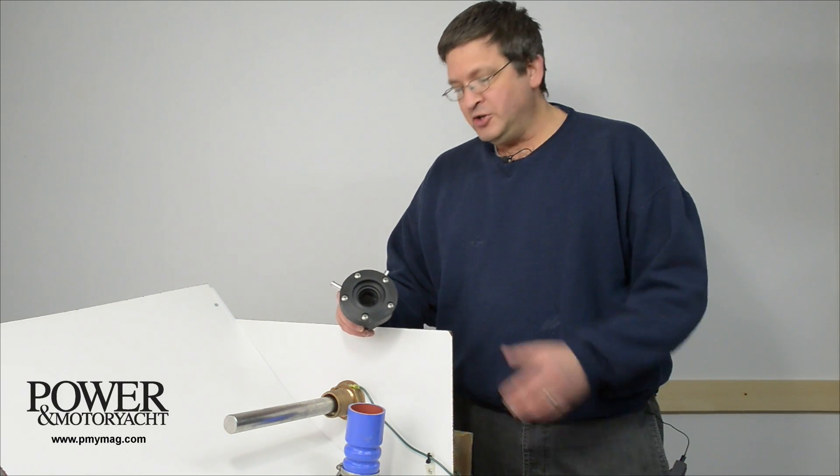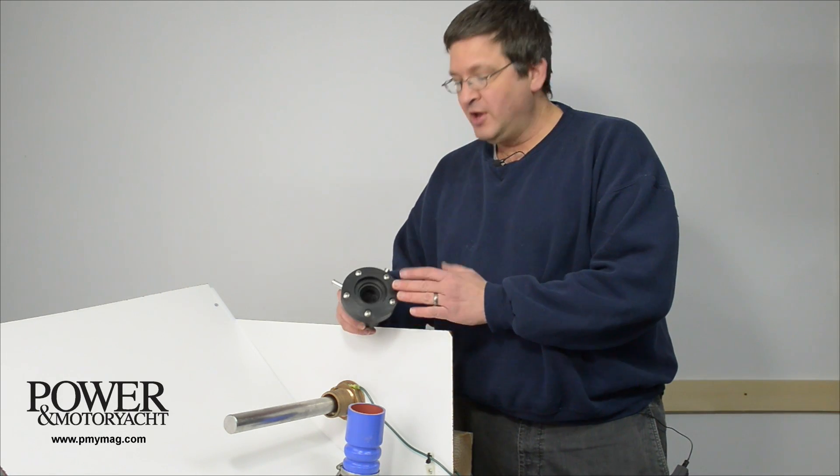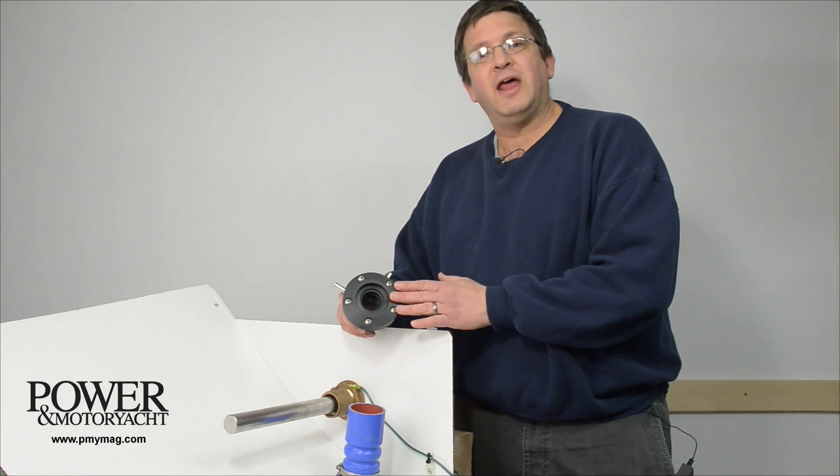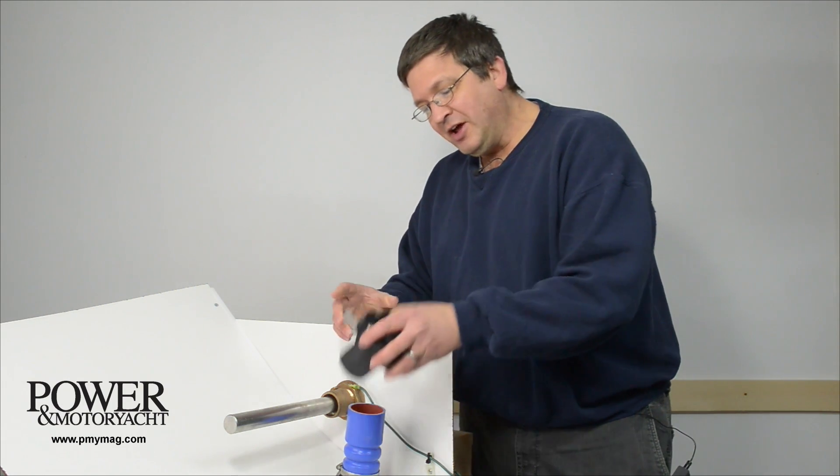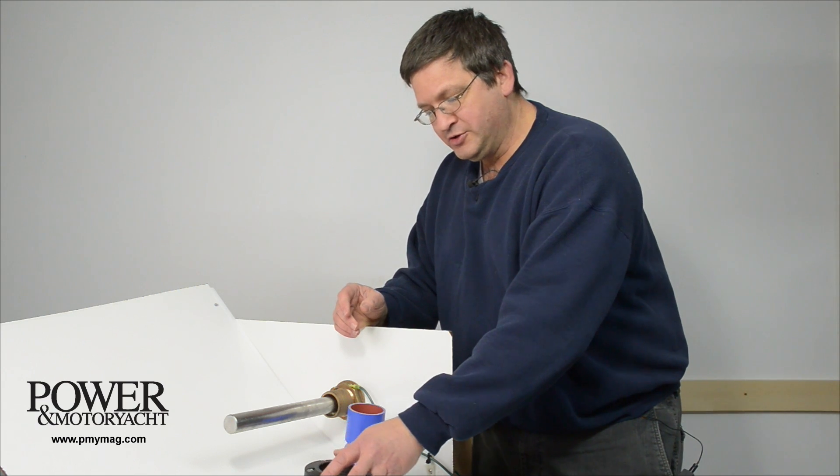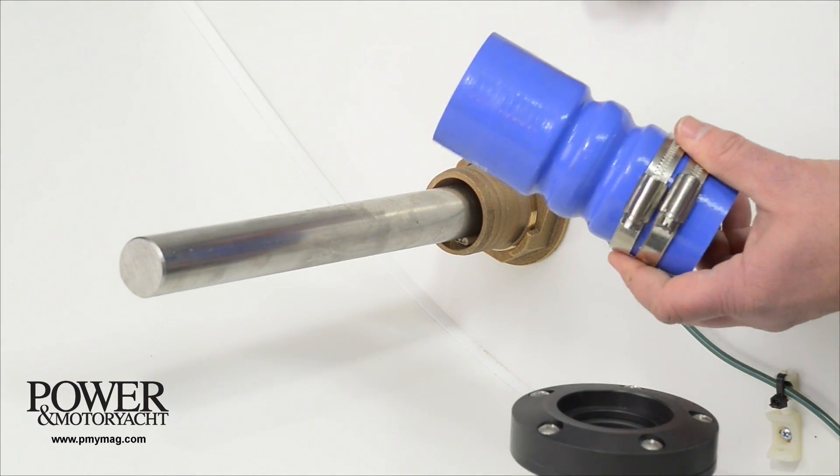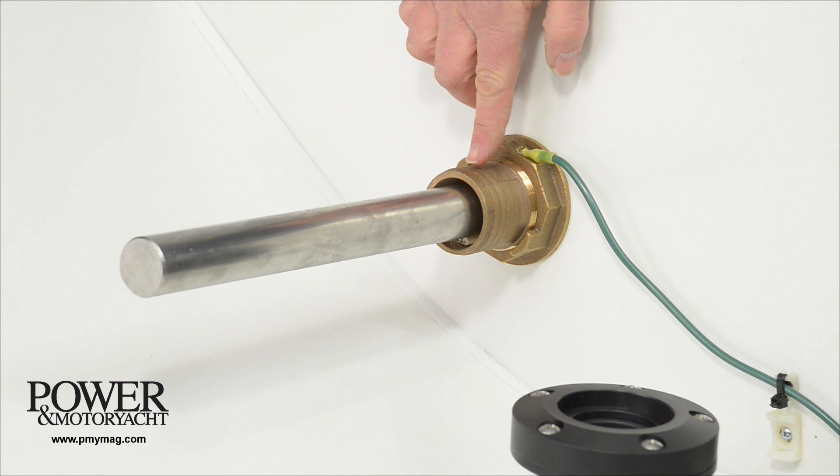If cooling water from the engine to your dripless shaft seal fails, either a lip seal like this or a face seal, there's a pretty good chance that housing is going to fail, leaving nothing between the sea and your bilge but a torn or melted bellows like this or even just a naked stern tube. Let me show you how to deal with that.